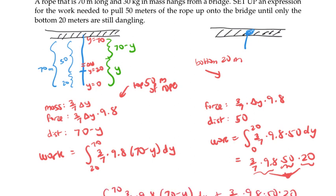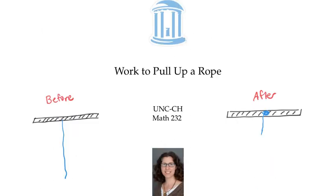Either way we set up our integral, although it looks different, will give us the same numerical answer once we integrate. That numerical answer is 5250 plus 4200, which is 9450 joules. In this video, we set up an integral — or a couple of integrals — to describe the work to pull up part of a rope onto a bridge.